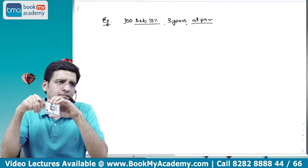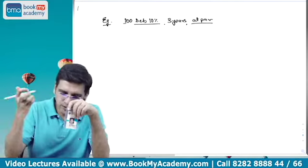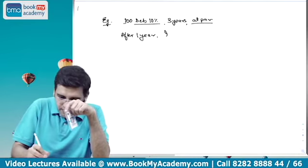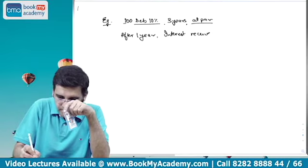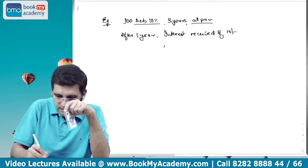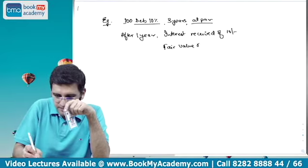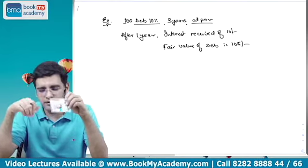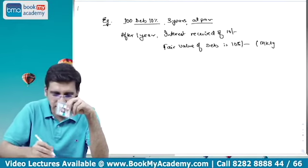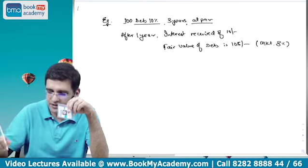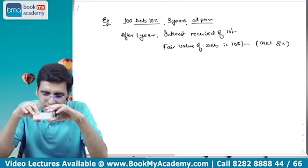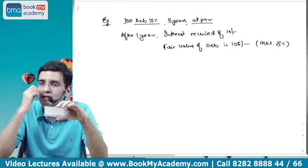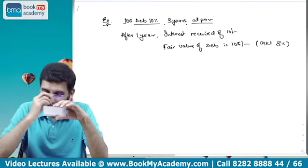After recording at 100 rupees, the question is what do I do after one year. Say after one year I get interest of 10 rupees. However, the fair value of this debenture is now 105 — it's a listed debenture with a market value of 105. Why? Because the market rate of interest is lower than this debenture's 10% rate. So obviously, since it's a fixed-rate debenture for 3 years giving 10 rupees per year, people in the market will pay more for it — hence fair value is 105.